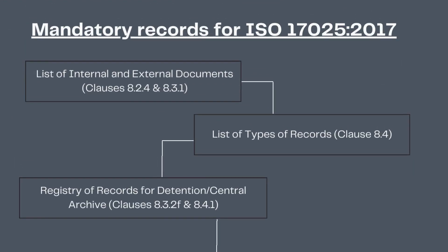Records are produced as proof during audits that the standard and associated internal procedures have been followed. Here are all the records that must be kept in accordance with ISO 17025:2017.